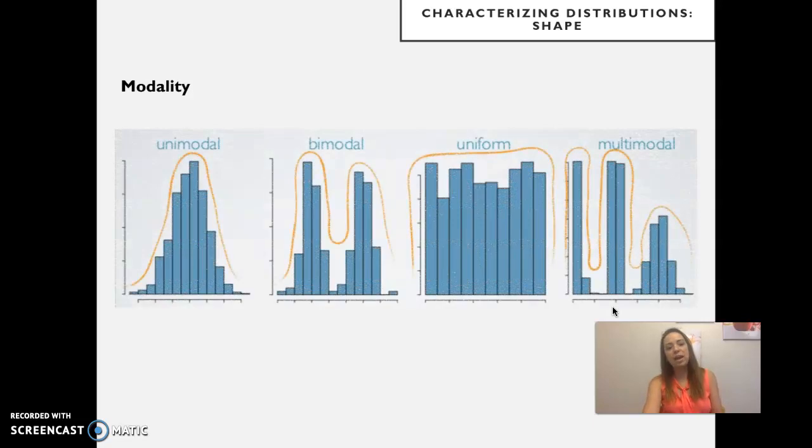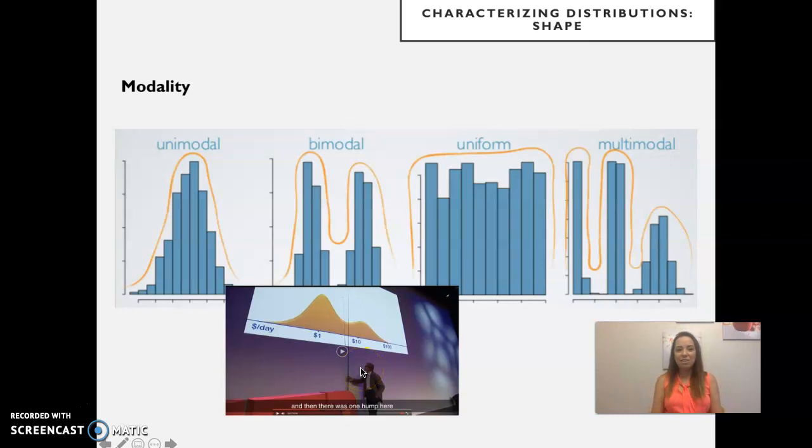Another thing about shape that we look at is modality. A distribution can be unimodal, just one peak. It can be bimodal with two peaks. It can be uniform, no peaks at all. Or it can be multimodal, multiple peaks. We tend to look at unimodal distributions in statistics a lot. But of course, other distributions do exist with real data. As you've seen in the little video I had you watch, that when you looked at how much people got paid over the years, it used to be a bimodal distribution with a bunch of countries, poor countries where the wage was $1 per capita, and the other more rich countries where it was around $10 a day per capita.